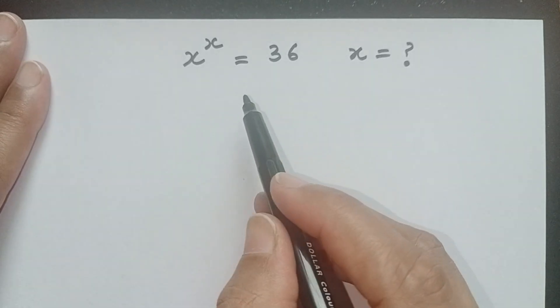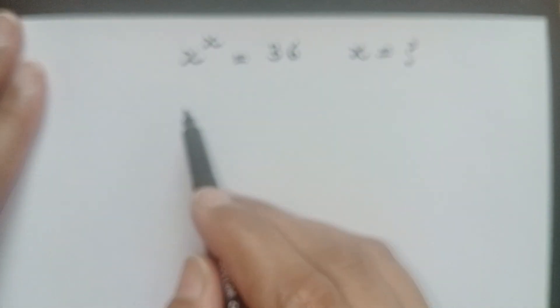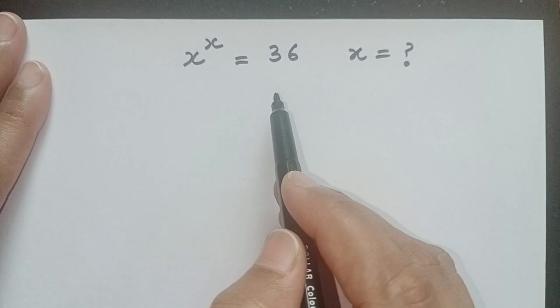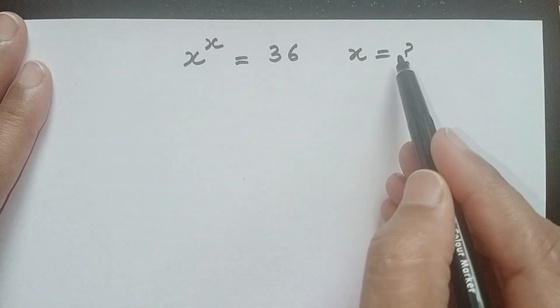Hi there, welcome back to Brain Equation. Today we are going to solve a very interesting exponential problem: x power x equals 36, and x is unknown.